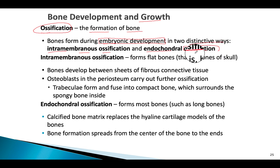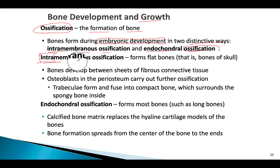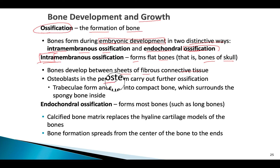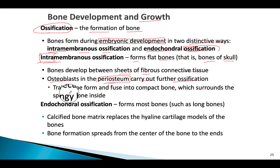Intramembranous ossification — 'intra' meaning inside — forms the flat bones, such as the bones of the skull. Bones develop between sheets of fibrous connective tissue. Osteoblasts in the periosteum carry out further ossification, eventually forming the trabeculae, which fuse into compact bone surrounding the spongy bone inside.